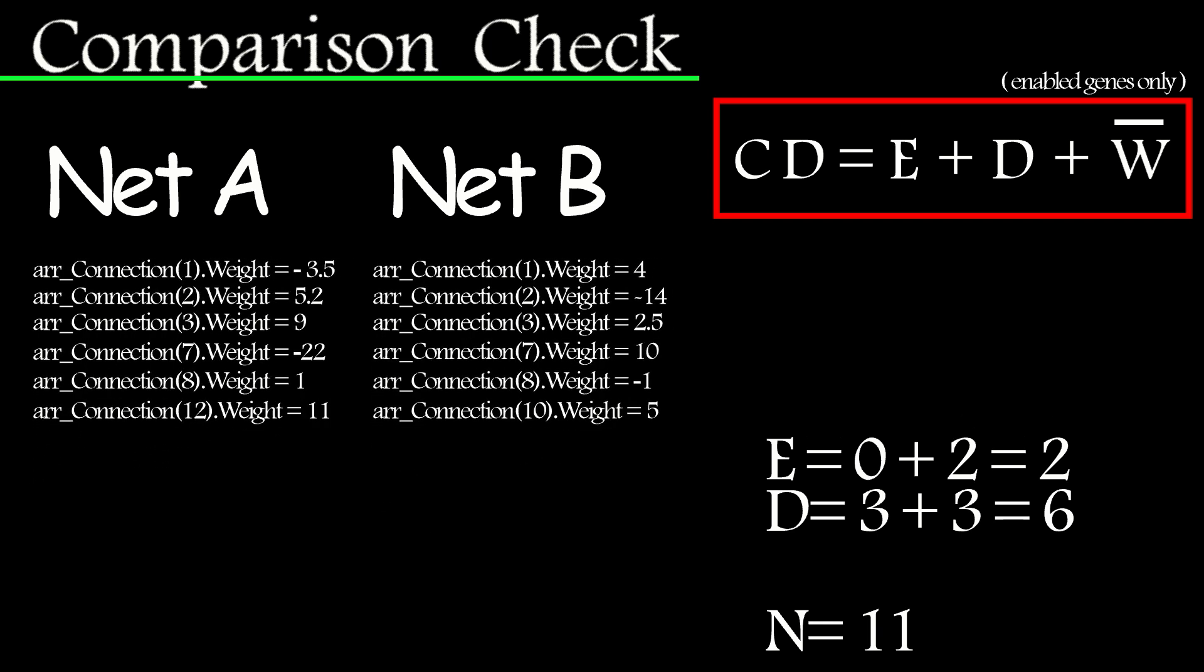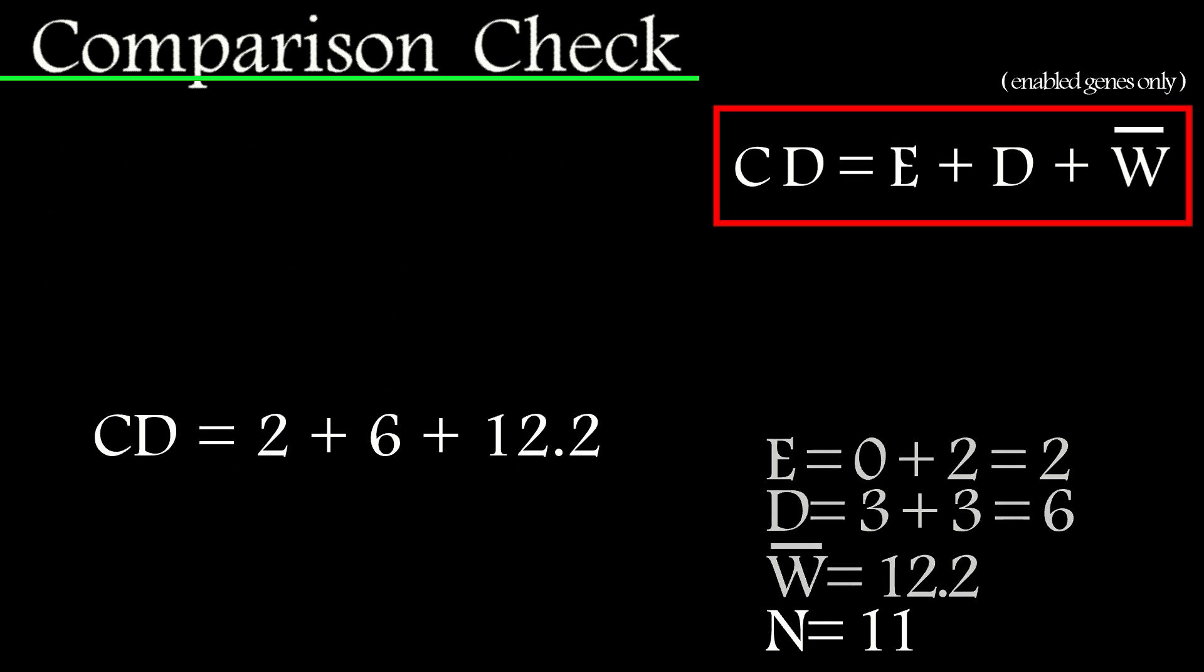And finally, the weight comparison. Here we sum up the absolute difference between the weights on connections that belong in both networks and get the average. Bringing all of that together gives you a value of 20.2, and that's a valid comparison check between the two networks. If you simply stop here and have a dynamic threshold enabled which will steer the number of species produced towards your preferred species target, you would use this to check if network A belonged to the same species as network B.